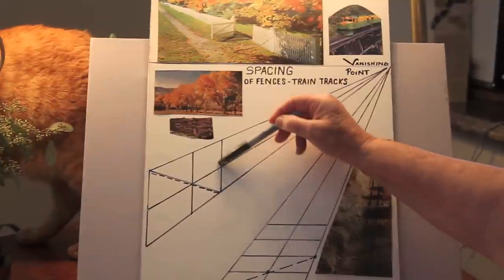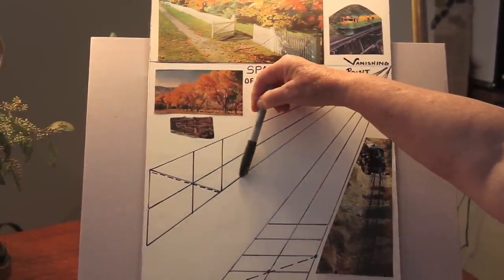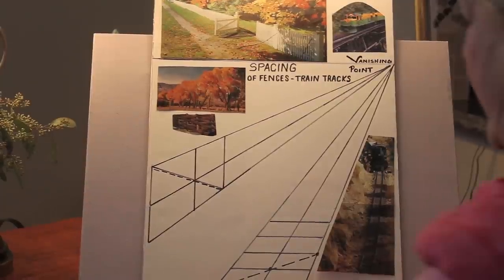So what we're going to do, then that pole ended up here. So now we're going to draw the next one here and then draw here. So I'm going to show you how that works.